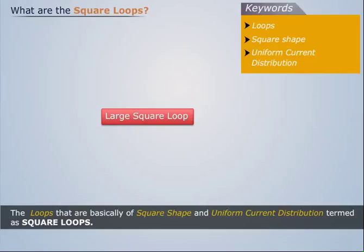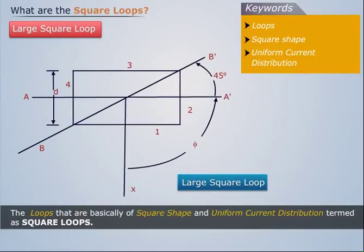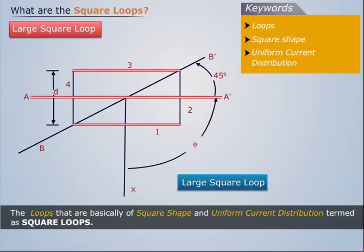Let us now consider the large square loop. The overall pattern in a plane is taken to be normal to the plane of the loop, and parallel to the two sides 1 and 3. This is shown by the line AA'.